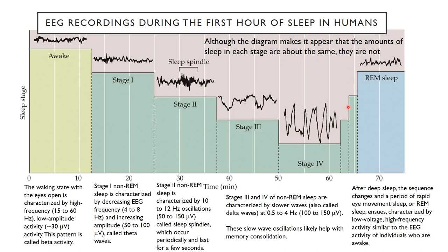After deep sleep, a period of rapid eye movement — REM sleep — begins. This is characterized by low voltage, high frequency EEG activity similar to that of individuals who are awake, even though they are asleep. Their eyes are moving around almost like they're looking at something. It's important to note that even though this diagram makes the stages look approximately equal in duration, they are not. The REM periods and deep sleep stages change in proportion across the night.